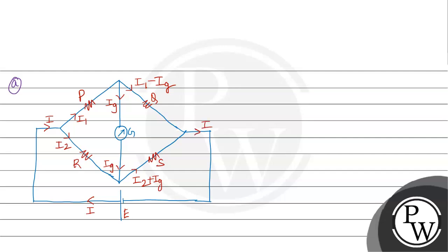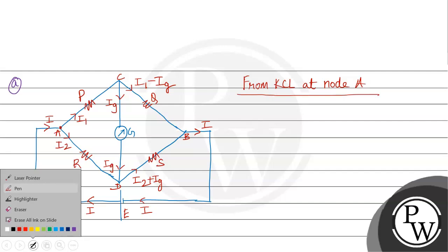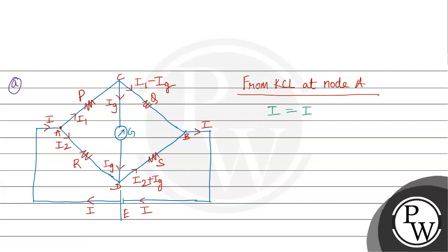The current goes from point A. At node A, applying KCL, the sum of incoming currents is equal to the sum of outgoing currents, so I1 flows through one branch. In balanced condition, the current through the galvanometer is zero.